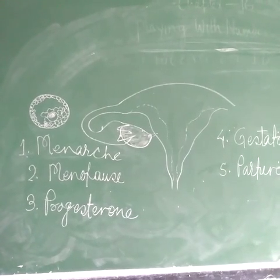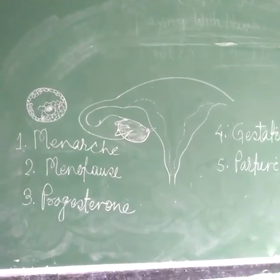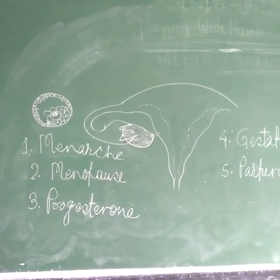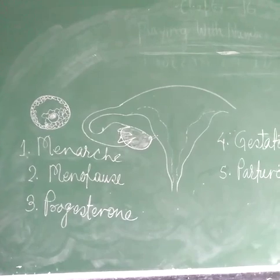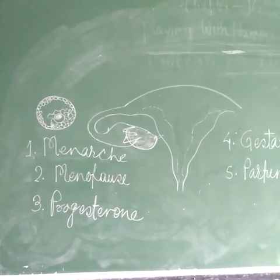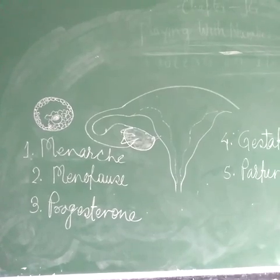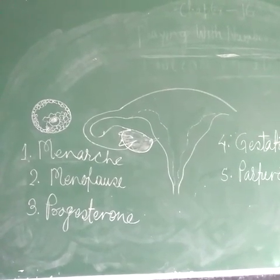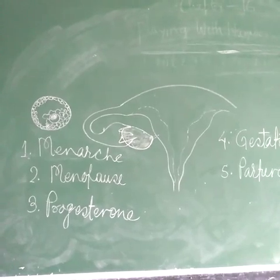Now let us discuss the first term — menarche. Menarche stands for the very first menstruation in the female body. This first menstruation occurs during puberty, when the female body attains puberty and there are sudden and drastic hormonal changes inside the female body.